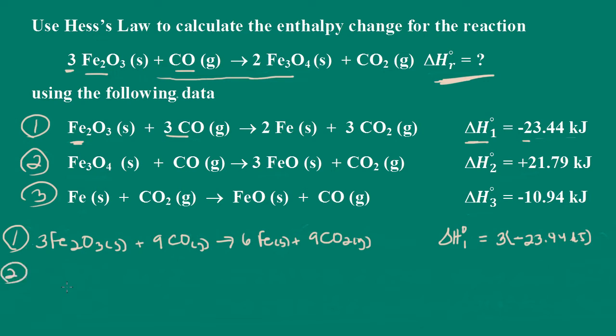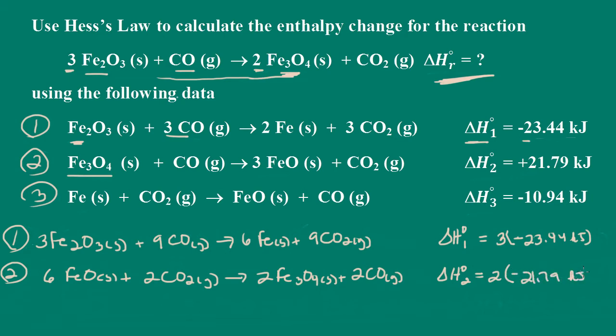Let's take a look at equation number 2. I noticed right away that the iron 4 oxide is a product in our overall equation. So I'm going to flip this equation and I also need two of these. When I flip the equation, I have to change the sign, and I also have to multiply by 2. So it's going to be 2 times negative 21.79 kilojoules.